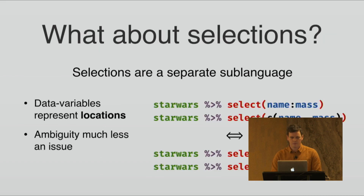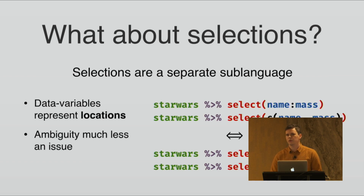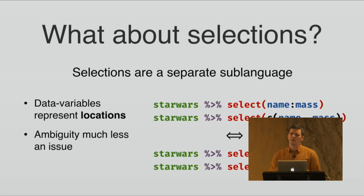So what about selections? As we have seen, selections are a bit different — they are kind of a separate sub-language, especially in the Tidyverse functions. The reason is that data variables in selections — for example if you use the select function in dplyr, but also pivot_wider, pivot_longer, and tidyr selection — represent the locations inside the data frame. That's actually the reason why you can use the colon operator, because saying `name:mass` is really the same as writing `1:3` — you create a sequence of locations. But that means that ambiguity is much less an issue when you are working with selections.